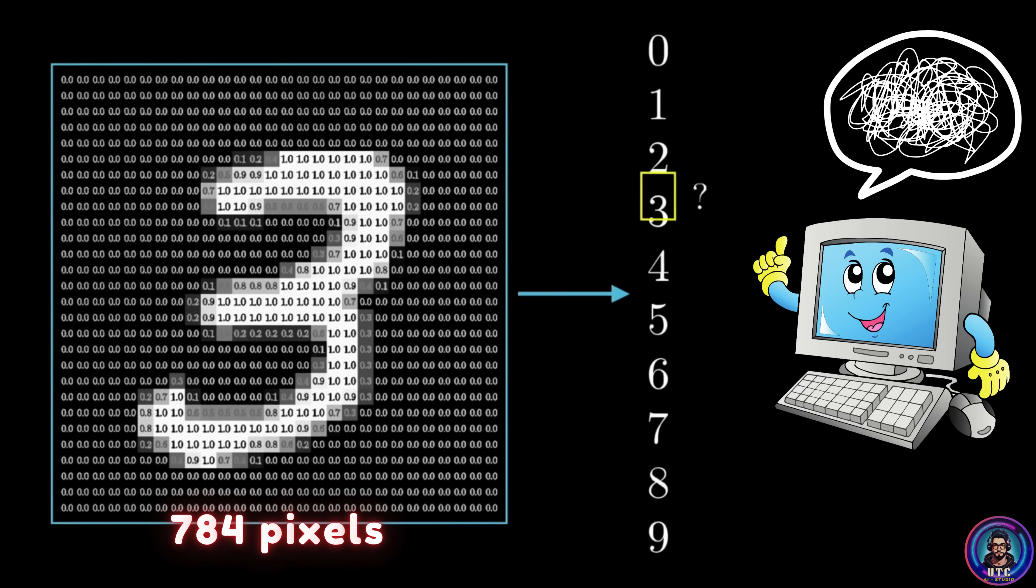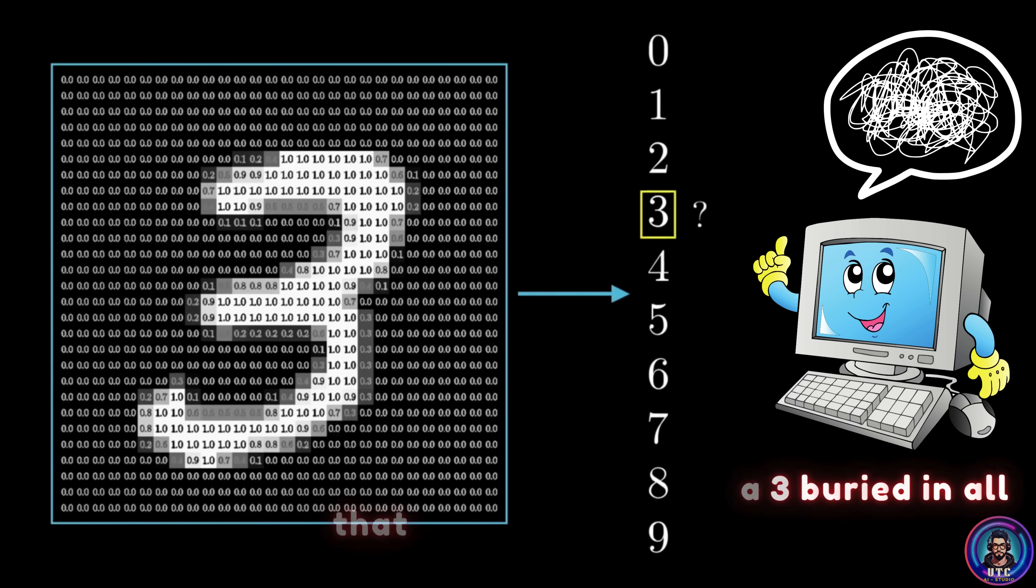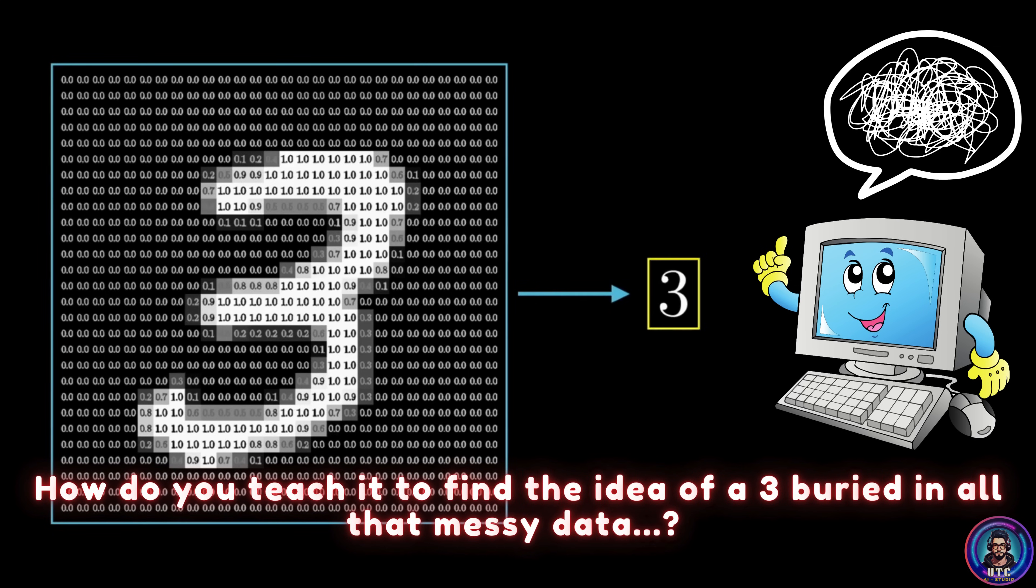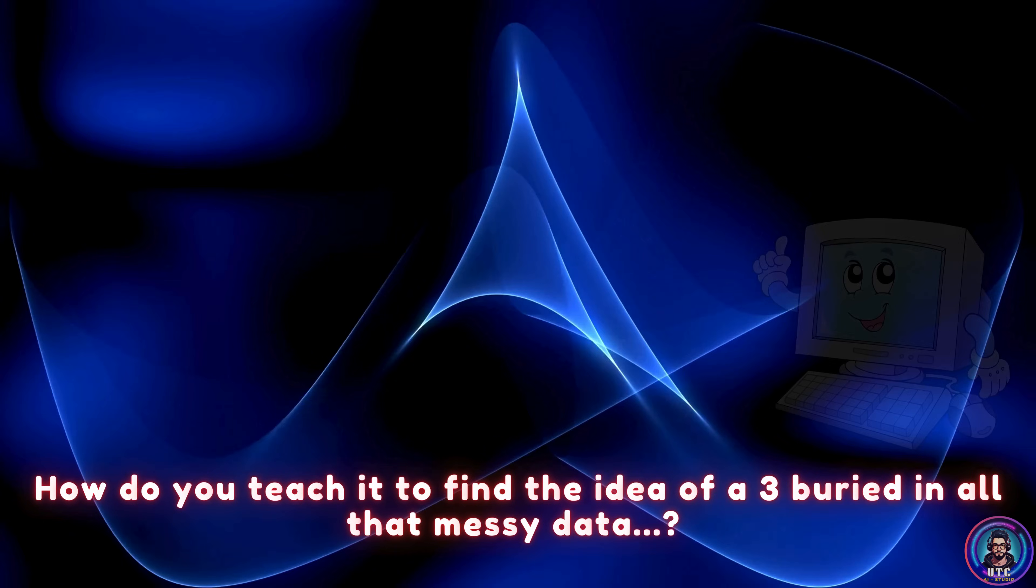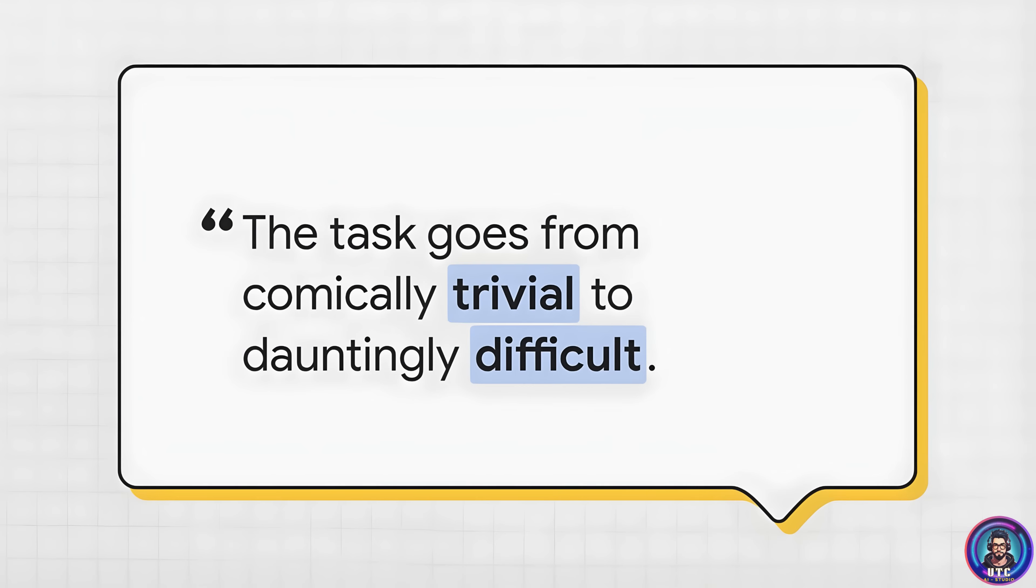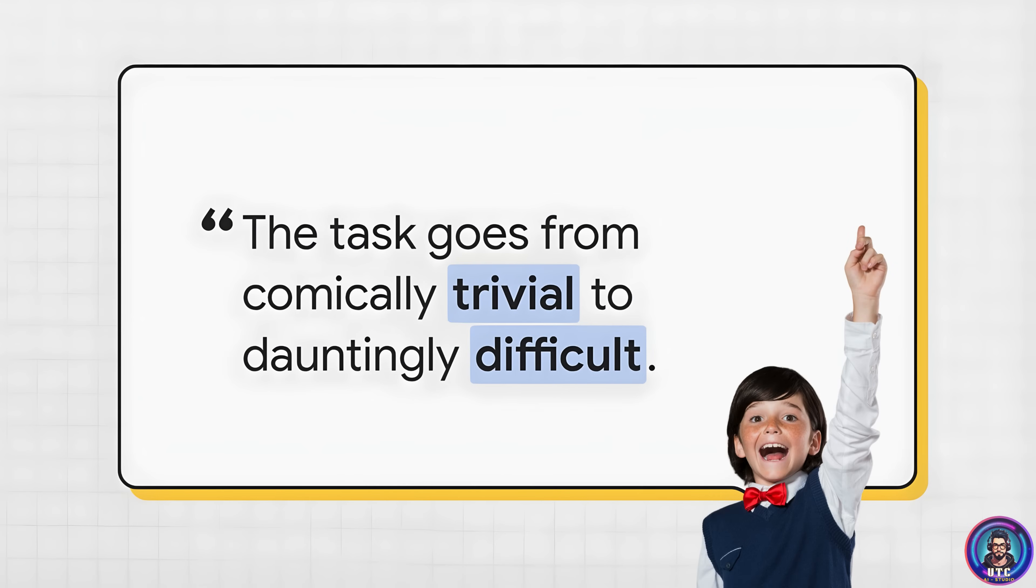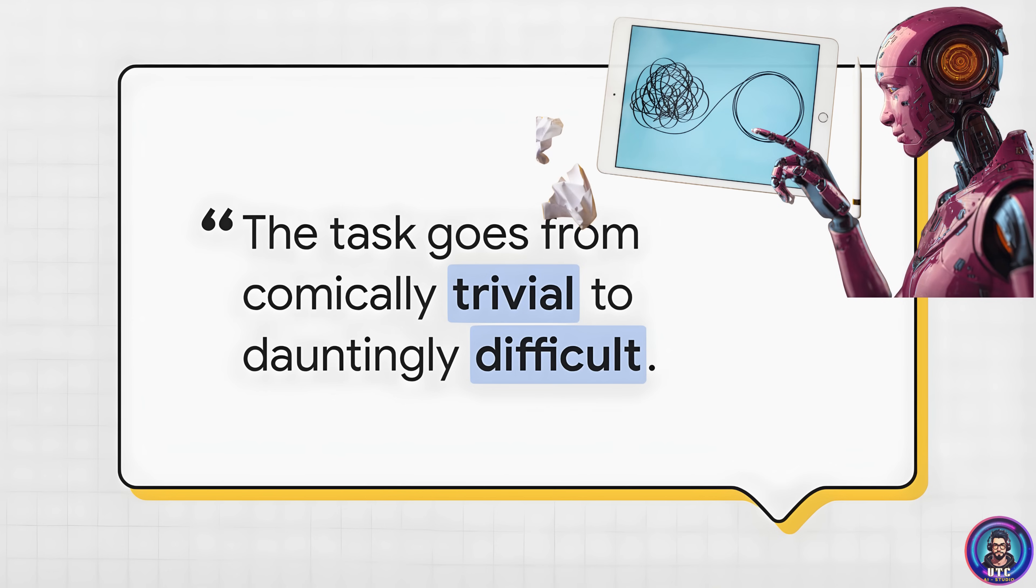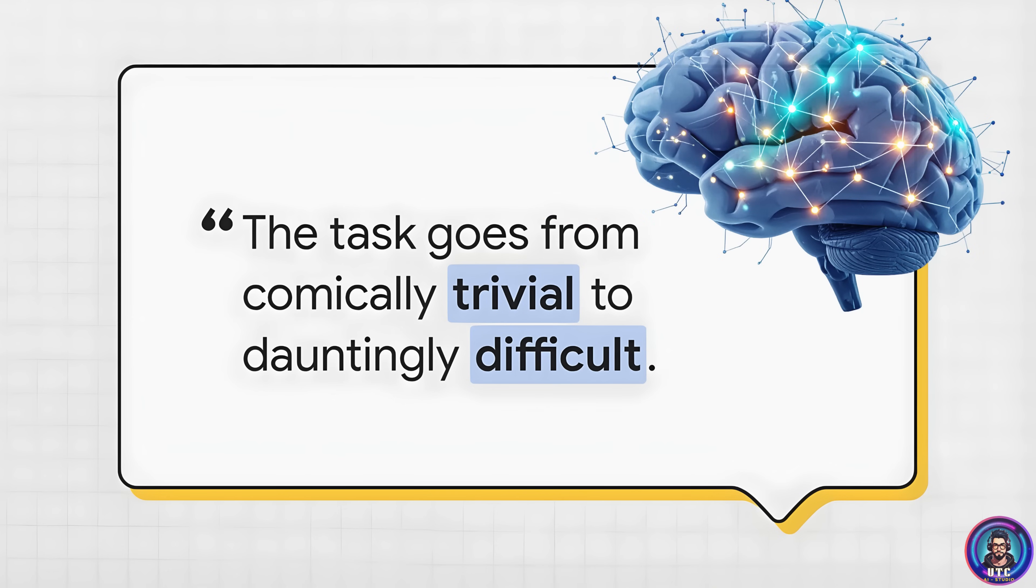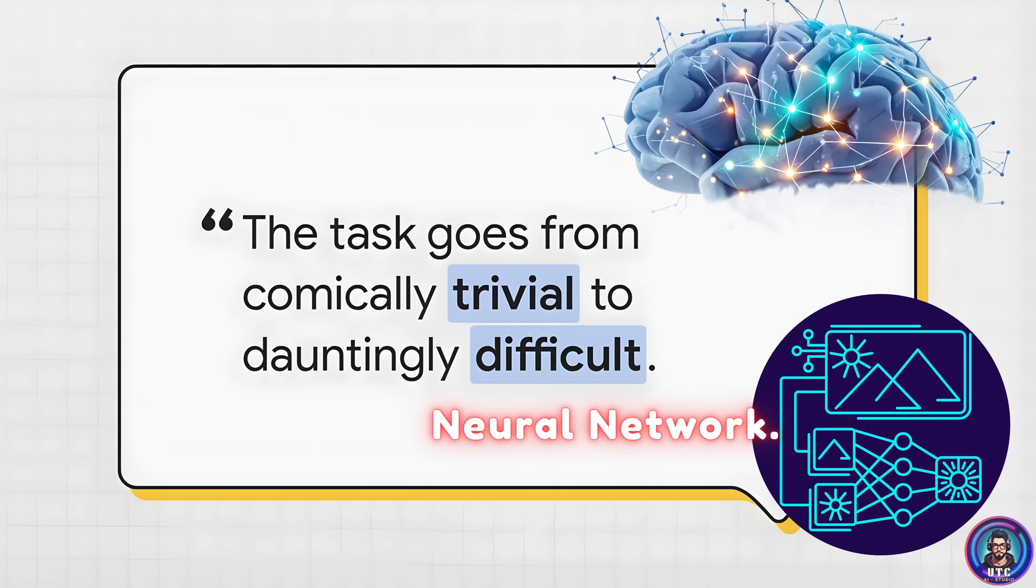A grid of 784 pixels, each one with a different shade of gray. So the real question is, how do you teach it to find the idea of a 3 buried in all that messy data? The task goes from comically trivial to dauntingly difficult. What's a complete non-issue for us is a massive hurdle for a machine. And the key solution to this whole puzzle is something called a neural network.